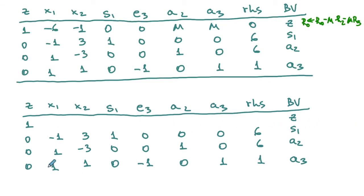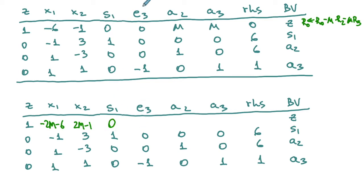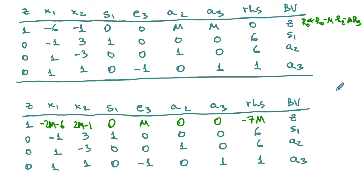The rest of the table remains unchanged, so we copy it. When we multiply rows two and three by M and subtract from row zero, the entry for x1 is −2M − 6, the entry for x2 is 2M − 1, the entry for s1 remains zero, the entry for e3 is M, and the coefficients for a2 and a3 will be zero because this is how we picked the multipliers for rows two and three to eliminate those entries. The objective value becomes −7M. Now we have a proper simplex tableau and can start iterations of the simplex method.